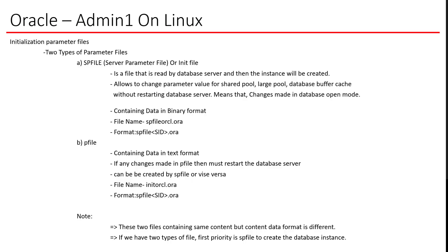Hello everyone, welcome to Oracle admin on Linux. In this tutorial we will discuss parameter files. There are two types of initialization parameter files: number one, the SP file or server parameter file, and number two, the P file. The SP file is read by the database server to create the instance, and allows changing parameter values for shared pool, large pool, and database buffer cache without restarting the database server.